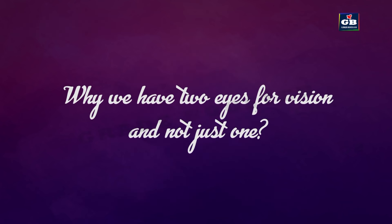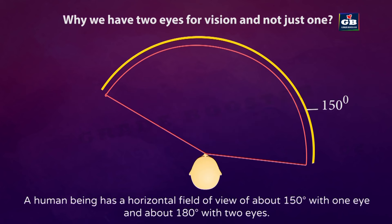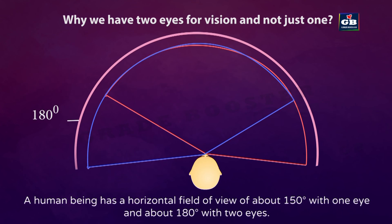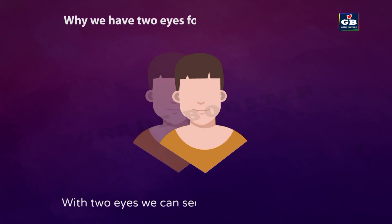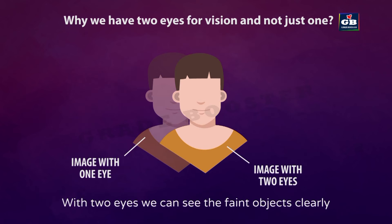We have two eyes and not just one. A human being has a horizontal field of view of about 150 degrees with one eye and about 180 degrees with two eyes — this type of vision is called stereoscopic vision. Faint objects cannot be seen properly with a single eye, and we also cannot get depth perception with single-eye vision. For a proper 3D view, we need a pair of eyes.